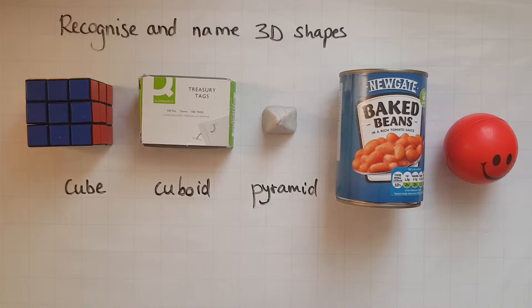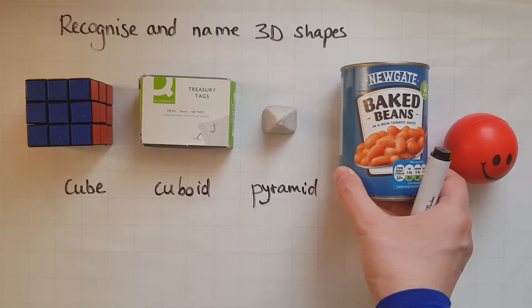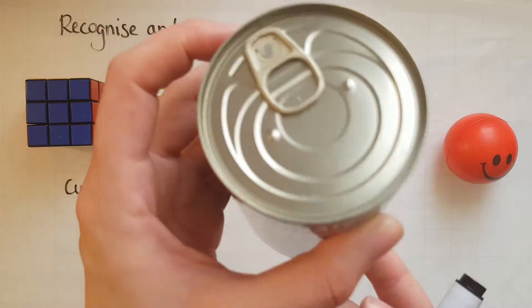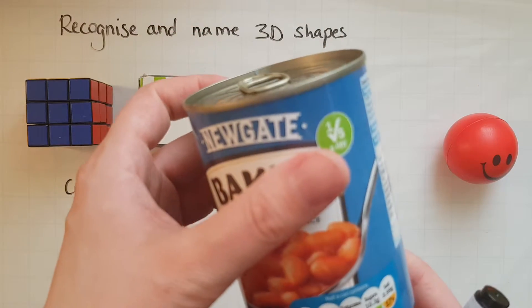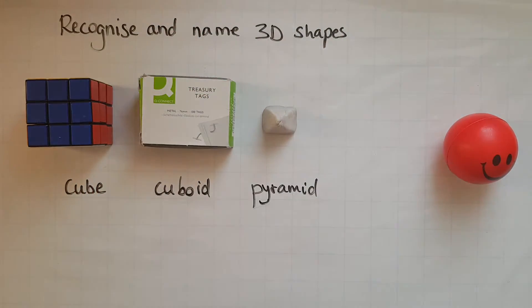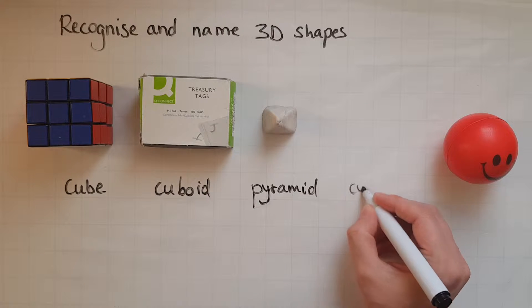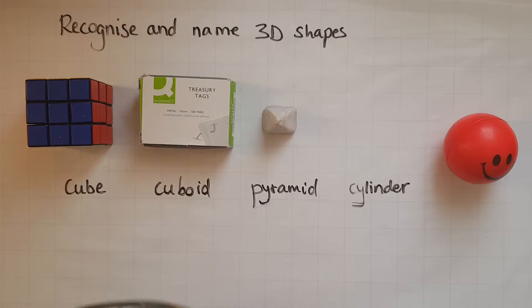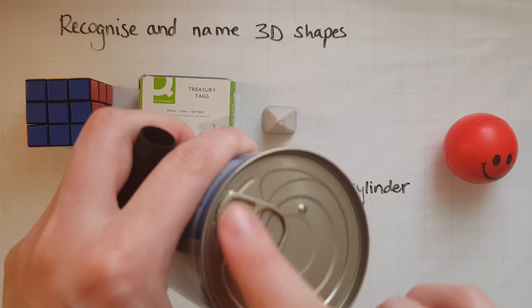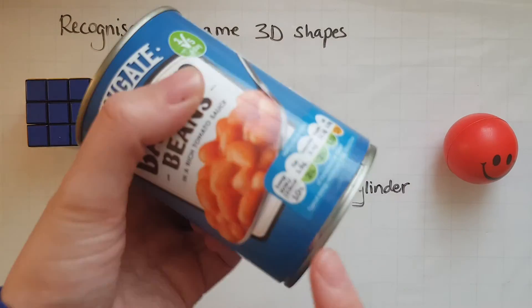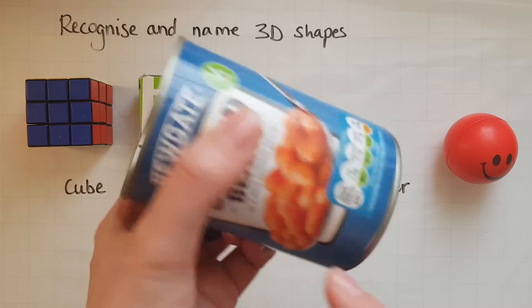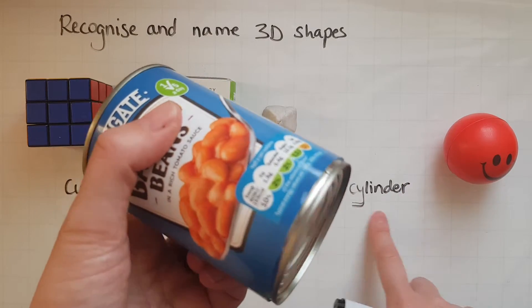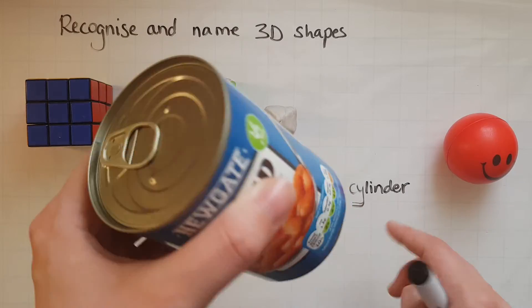The other shape that we've got here is a cylinder. Cylinder — you can see circles on both sides. Circles, cylinder, circle, cylinder.